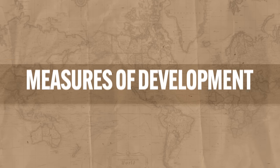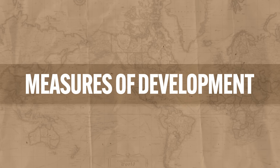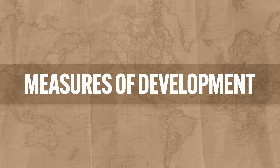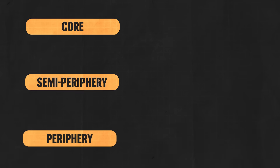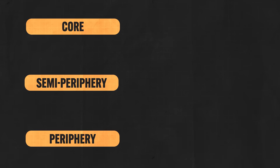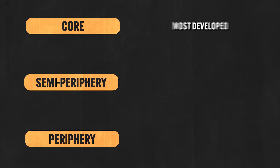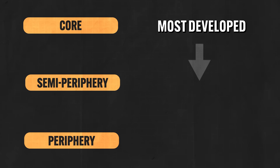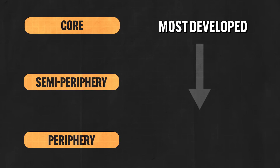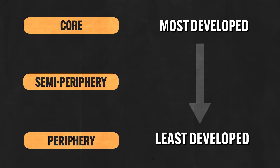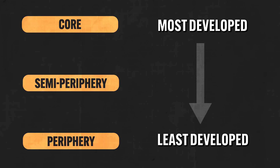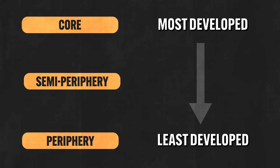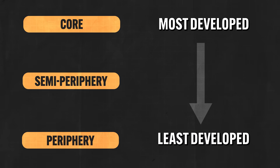In the last video we talked all about how countries across the world fall into one of three categories, namely core, semi-periphery, or periphery. On this scale, core countries are more economically developed, semi-periphery countries less developed, and periphery countries the least developed of all. We essentially group all these countries into these three categories based solely on their economic factors.